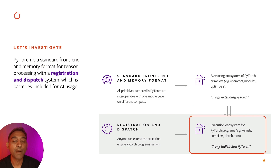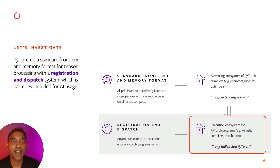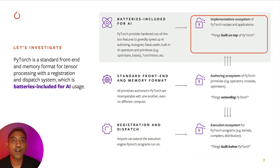Second, PyTorch has a registration and dispatch system. The goal of this is for anyone to extend the execution engine — for example, the operator set — and still be fully interoperable, even extending it to different hardware. This created a massive acceleration ecosystem to improve the execution of PyTorch programs. Examples here include operators, compilers, and hardware. A unified front-end, data format, registration, and dispatch system are all domain agnostic.